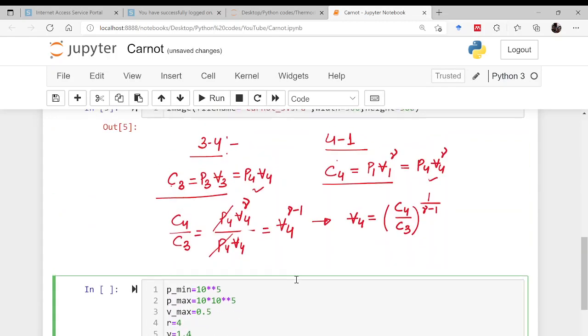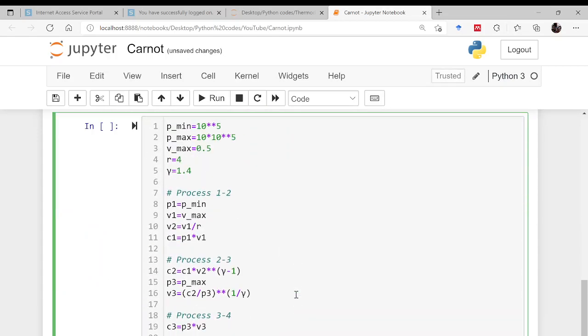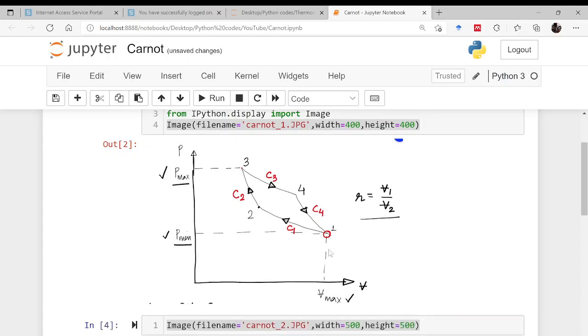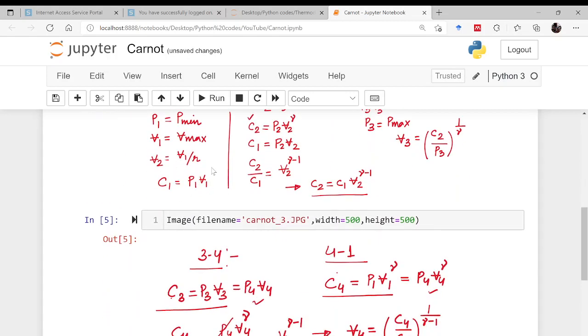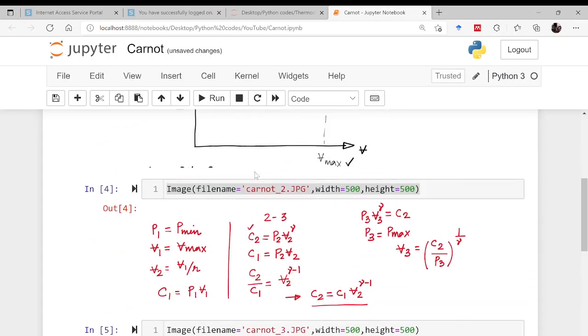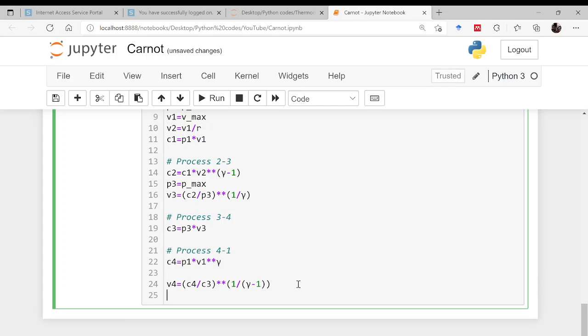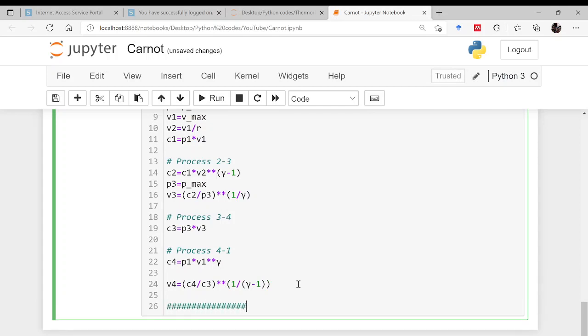Now it is the time to plot every process. First we will be plotting this. Here the minimum volume is V2. So we will be developing an array using linspace from V2 to V1 and then we will be using this C1 to know the pressure variation. So from here the plotting starts.